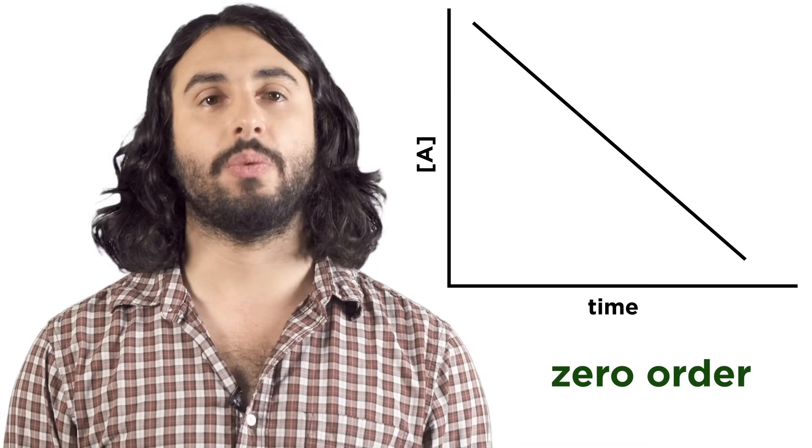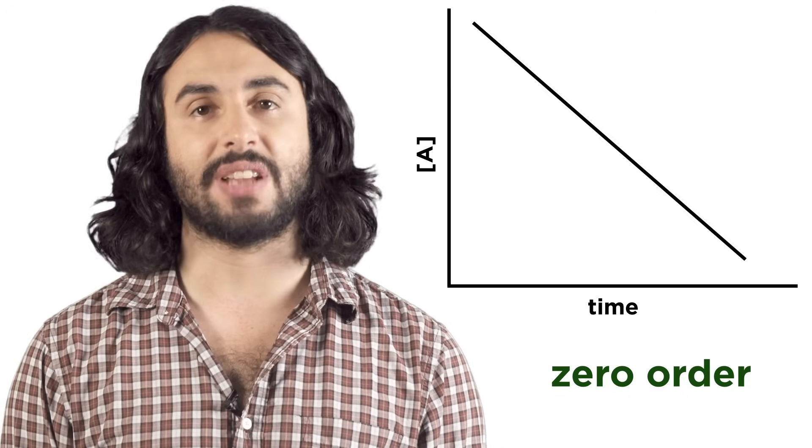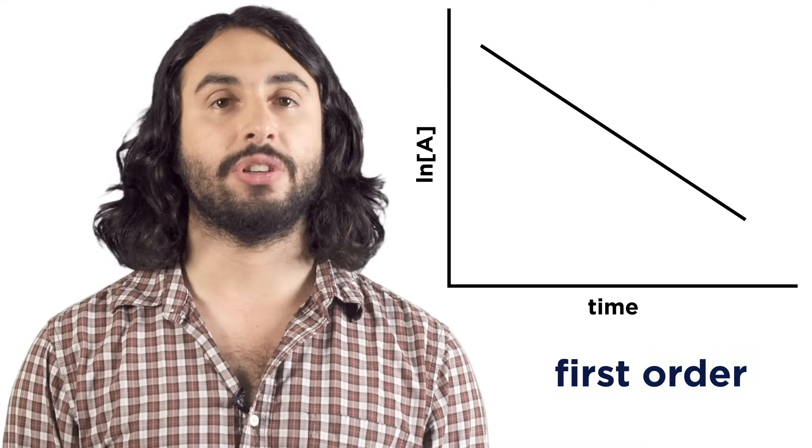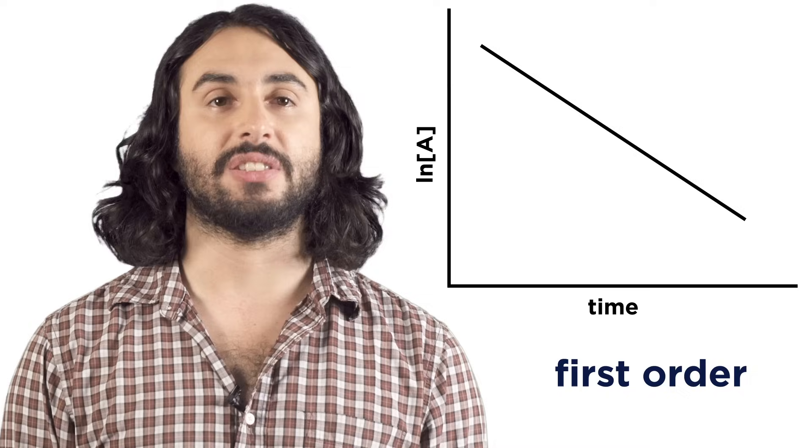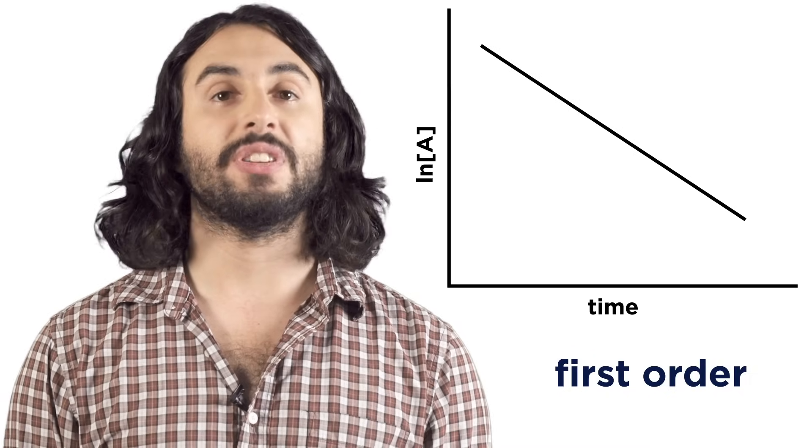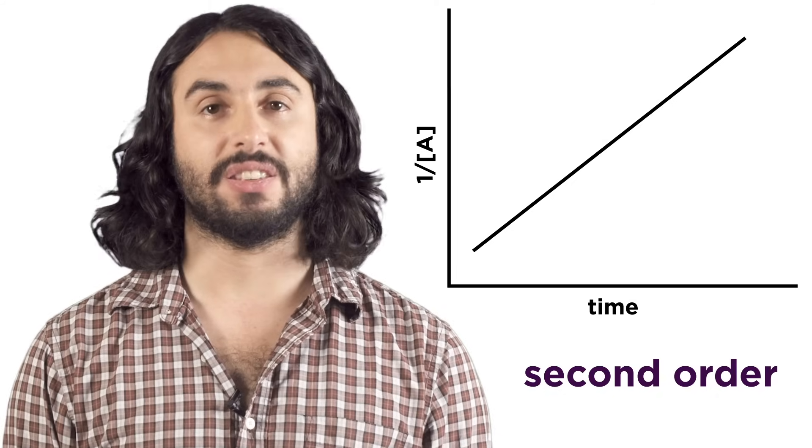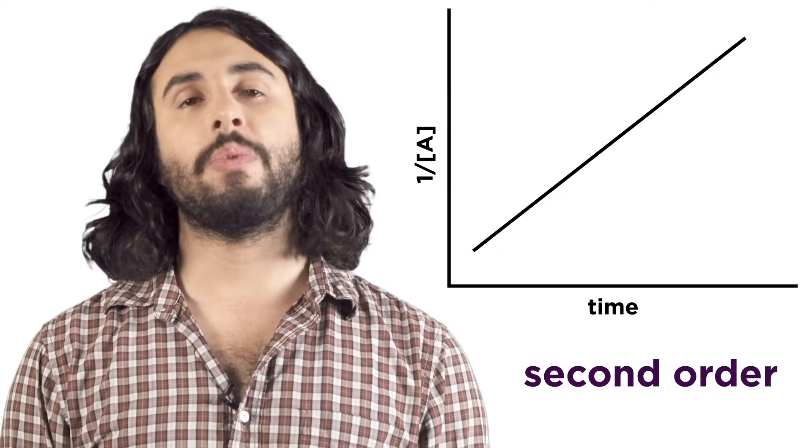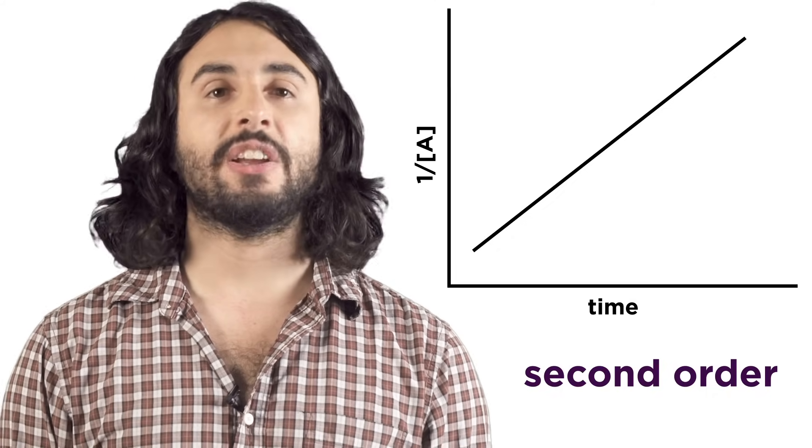We can see that for a zero order reaction, concentration versus time gives us a straight line. For a first order reaction, natural log of concentration versus time gives us a straight line. And for a second order reaction, the inverse of concentration versus time gives us a straight line.